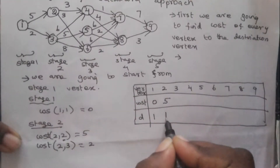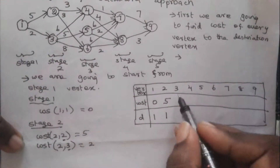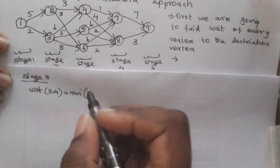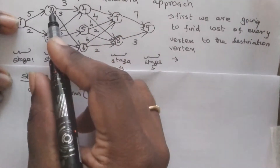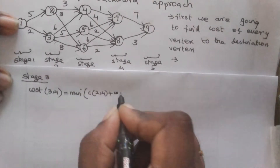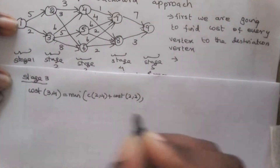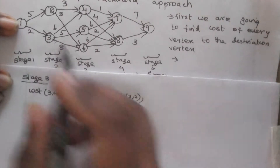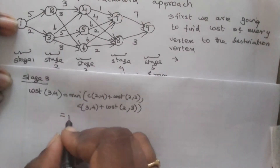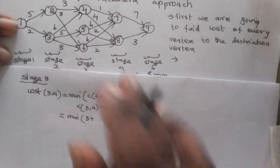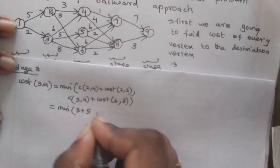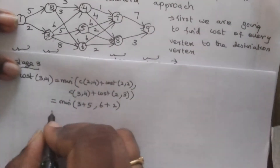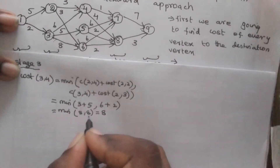Now we are going to find out the cost of stage 3 vertices. In stage 3, there are 3 vertices: 4, 5, and 6. For vertex 4, two edges are coming in — from vertex 2 to 4, and vertex 3 to 4. We find the minimum of C(2,4) + cost(2,2) and C(3,4) + cost(2,3), which is minimum of 3+5 and 6+2, giving minimum of 8 and 8. So cost(3,4) = 8, and we store both vertices 2 or 3 in D.